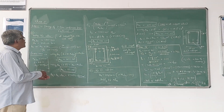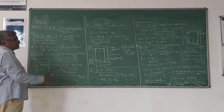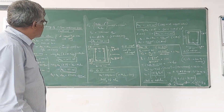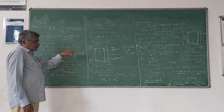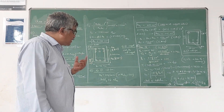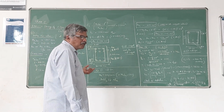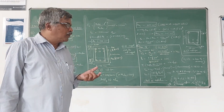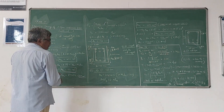In this class we will continue the 3-span continuous beam which we discussed in the last class. We have seen that the continuous beam has to be designed as a doubly reinforced section because the MU value was greater than MU limiting value. Now let us go for the design.